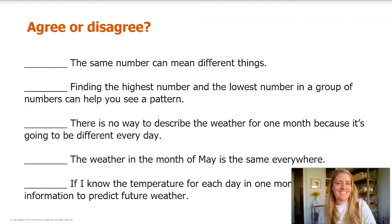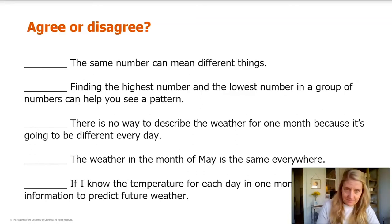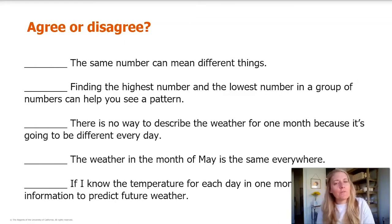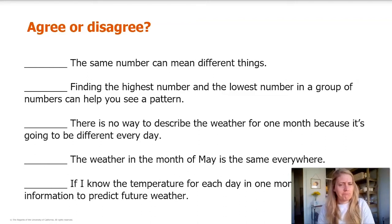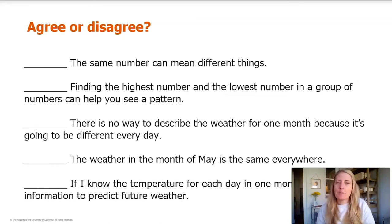Here's the first sentence: the same number can mean different things. Second sentence: finding the highest number and the lowest number in a group of numbers can help you see a pattern. Sentence number three: there is no way to describe the weather for one month because it's going to be different every day. The fourth sentence: the weather in the month of May is the same everywhere. And the last sentence: if I know the temperature for each day in one month, I can use this information to predict future weather.